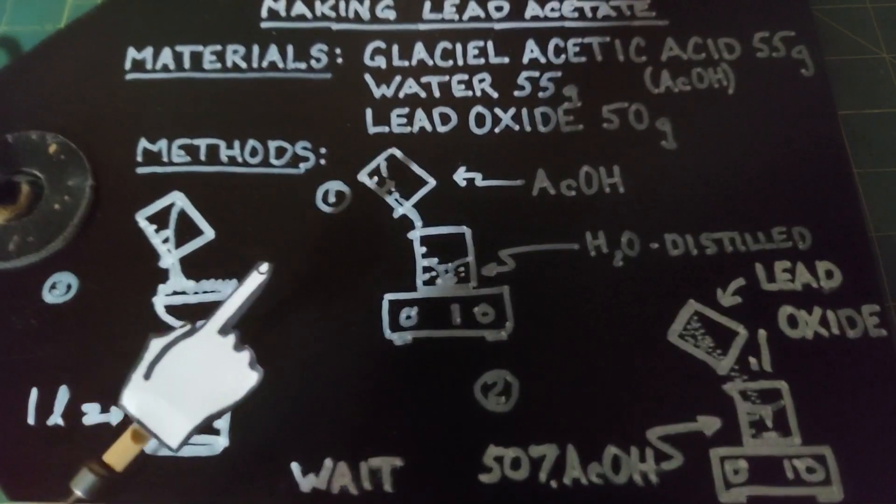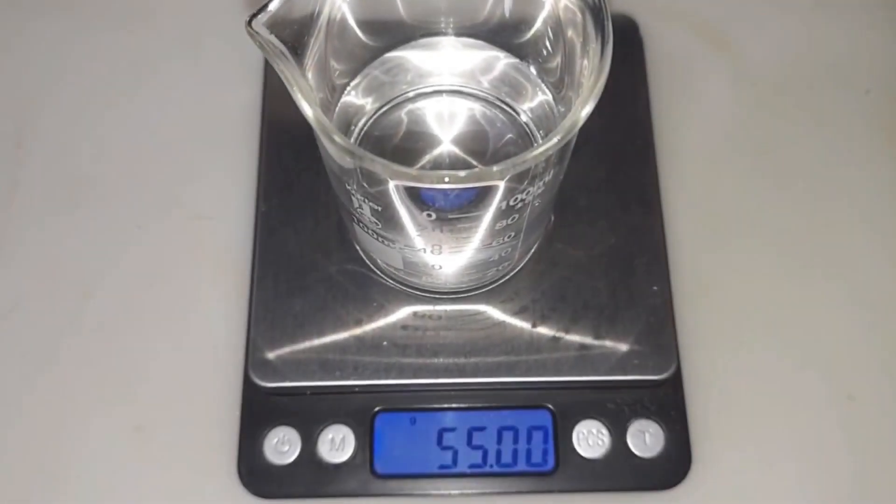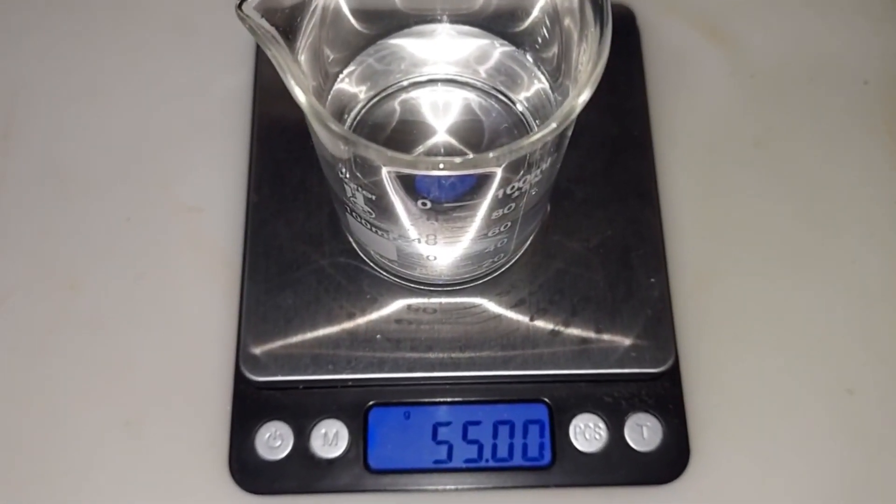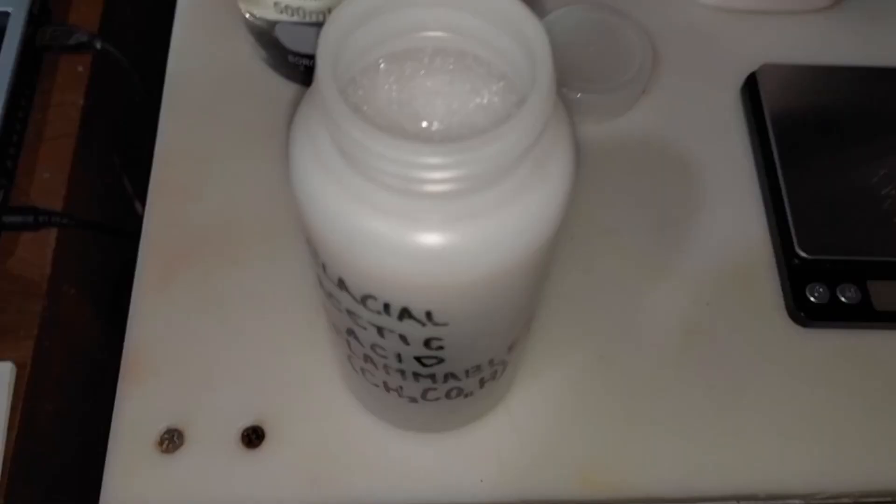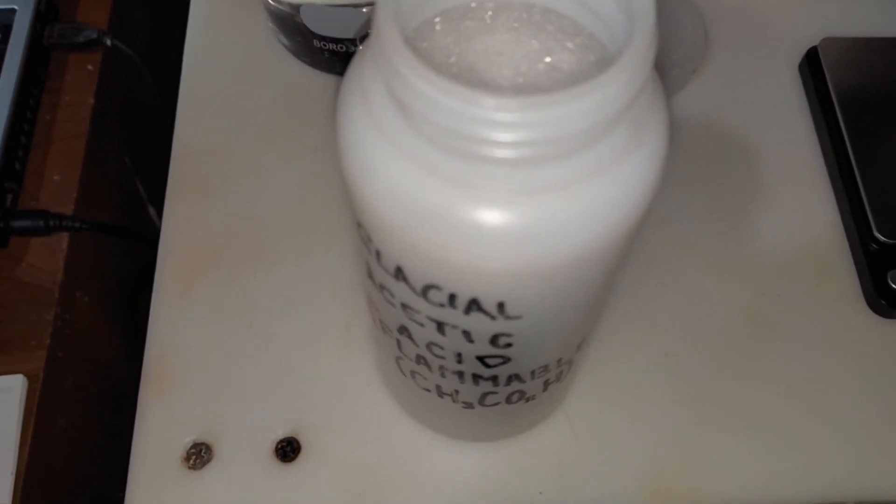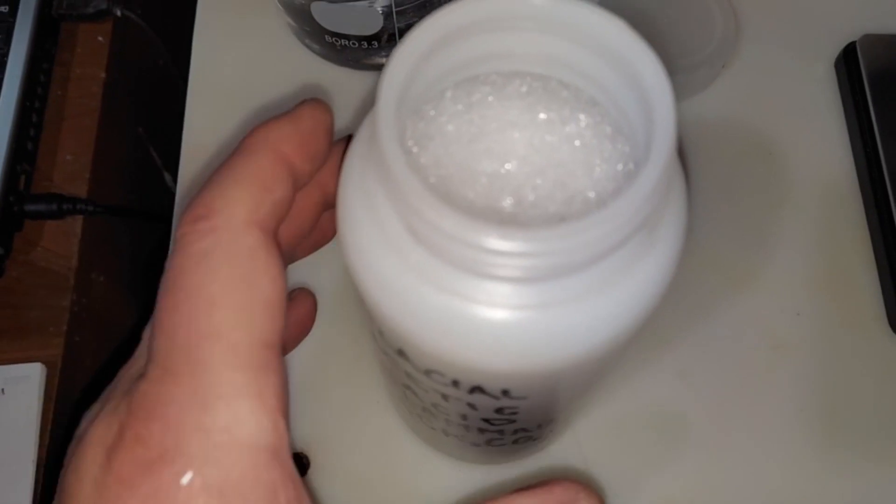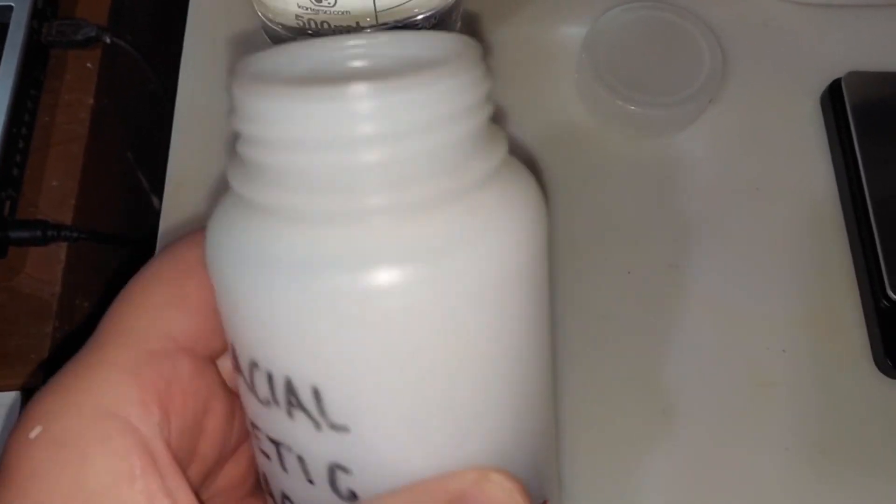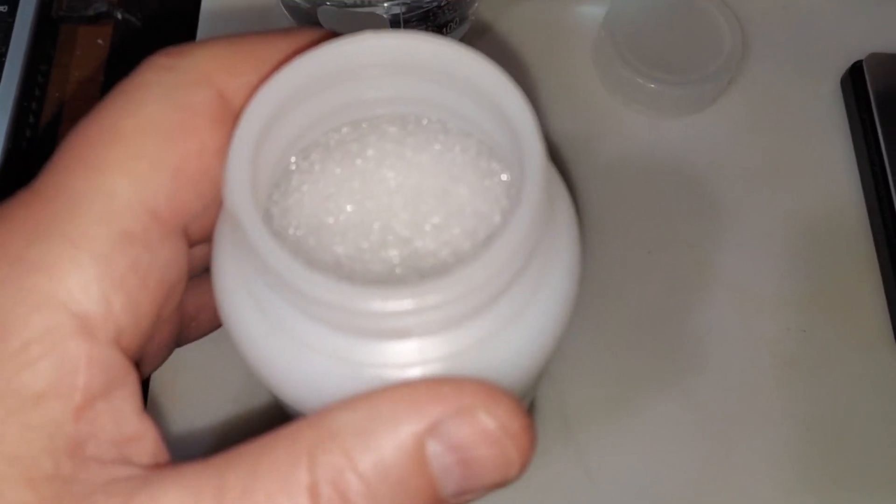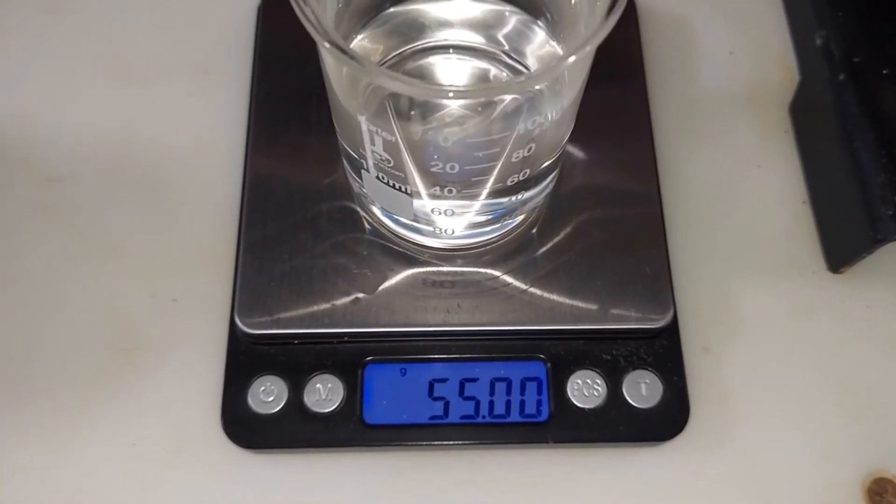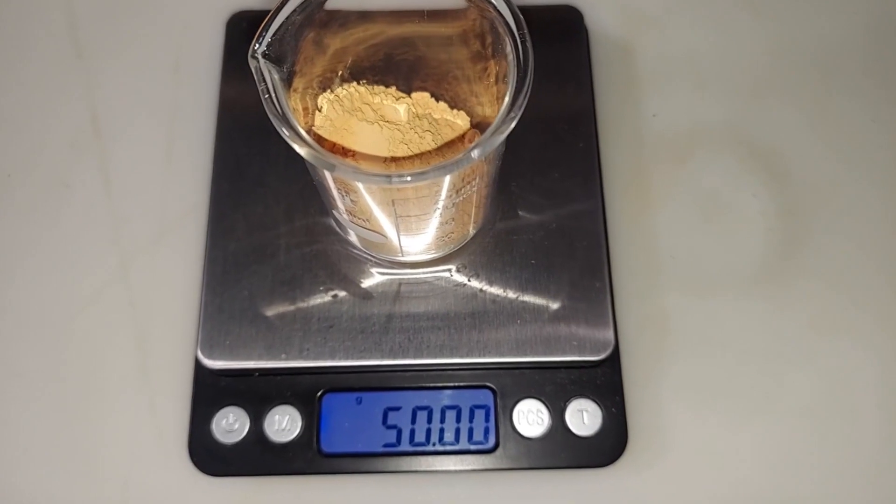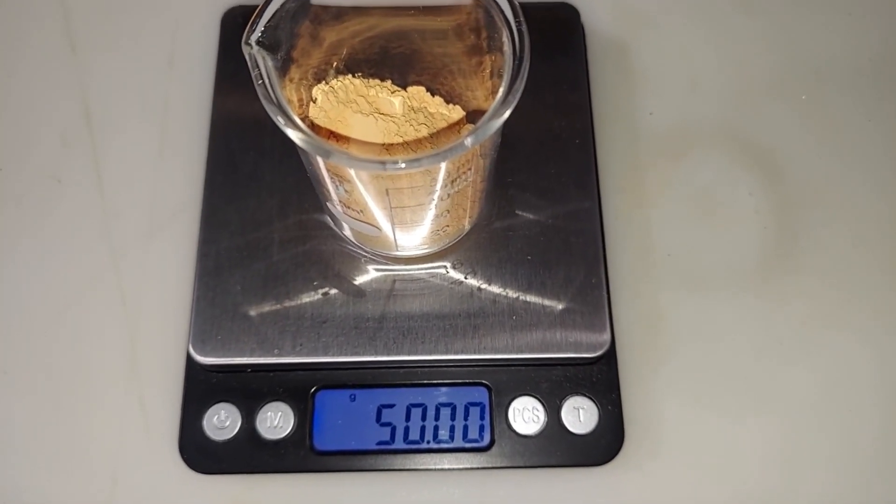To start making our 50% acetic acid solution by weight, we're going to start with 55 grams of water. Something interesting about glacial acetic acid is that it turns into a solid below 63 degrees Fahrenheit, so this is rock hard and also it's flammable. After I melted it, 55 grams of pure acetic acid. And our final ingredient in making our lead acetate is 50 grams of lead oxide.